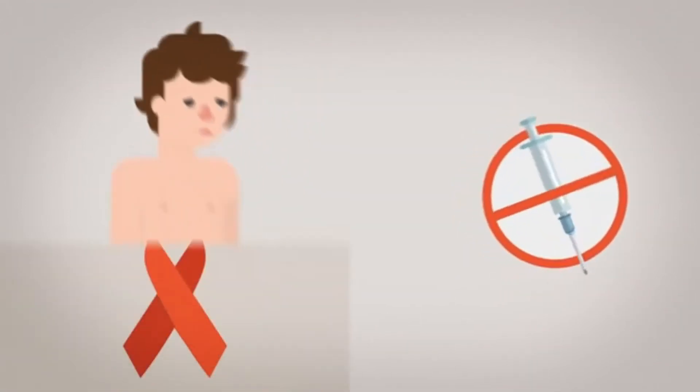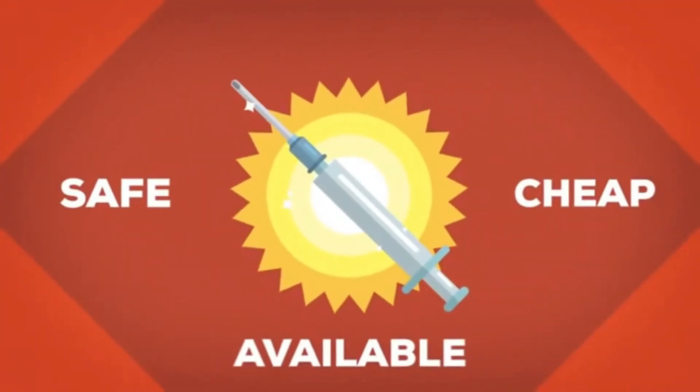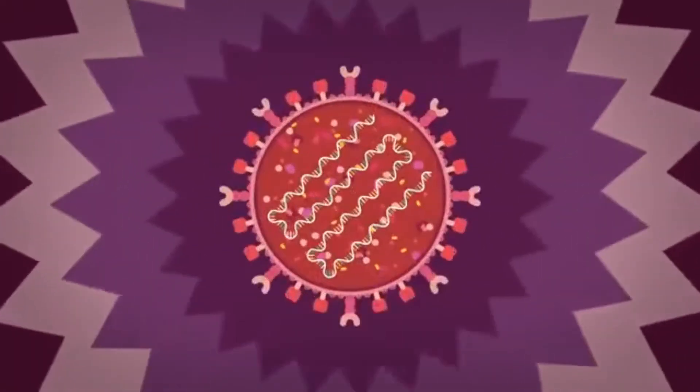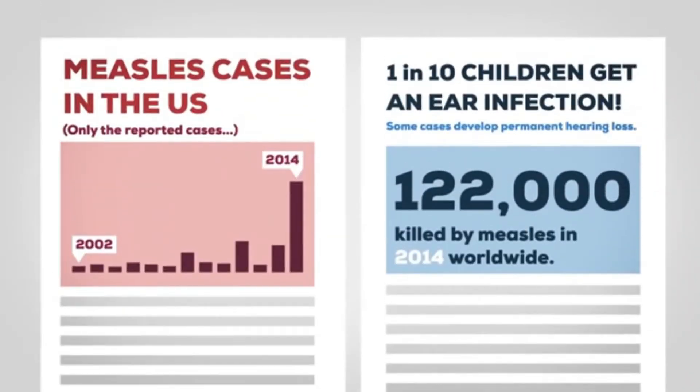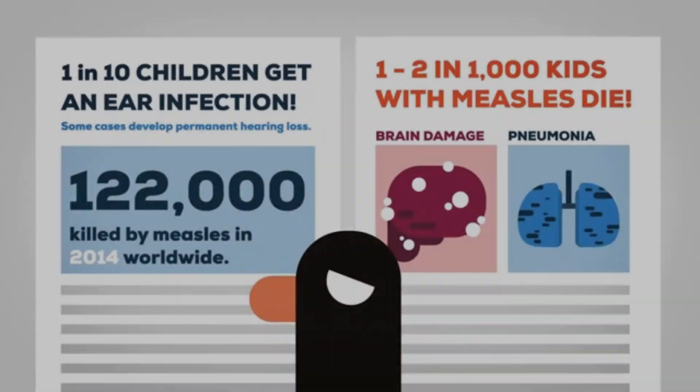The U.S. closed out 2018 with a total of 17 outbreaks of measles and cases had continued to occur in 2019. 2019 marked the greatest number of reported measles cases in the U.S. since 1992 and since measles was declared eliminated in 2000. Of those diagnosed with measles, approximately 10% required hospitalization. The majority of the cases are among people who are not vaccinated against measles.